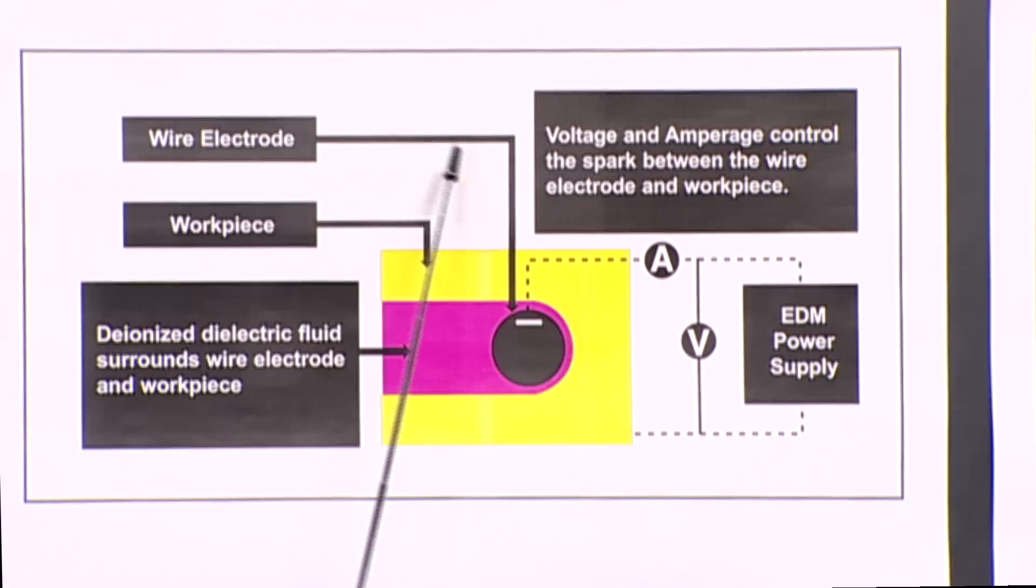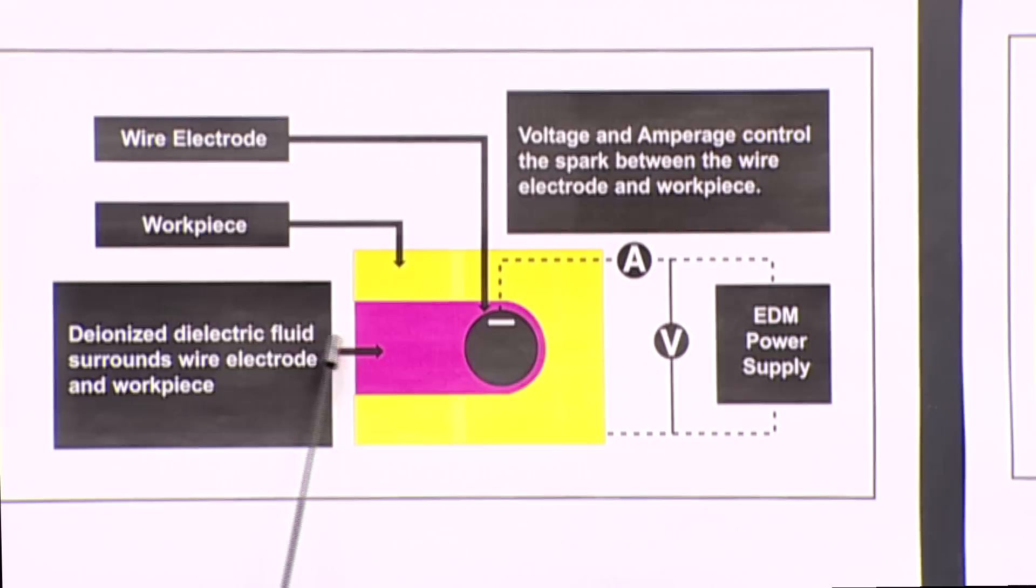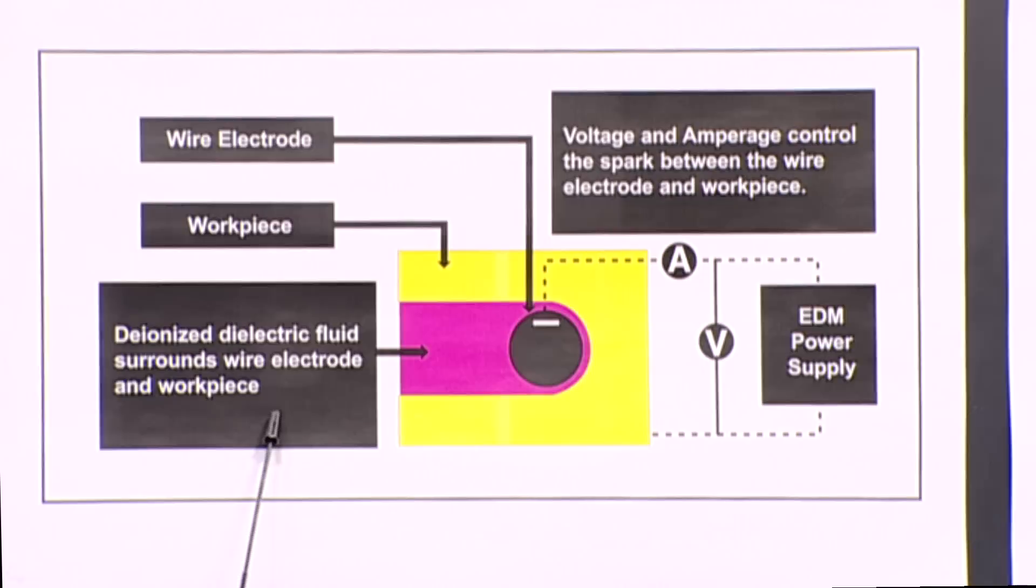This is the wire electrode, this black over here. The yellow is the workpiece. The magenta is deionized dielectric fluid, surrounds wire electrode and workpiece. Now this is important.